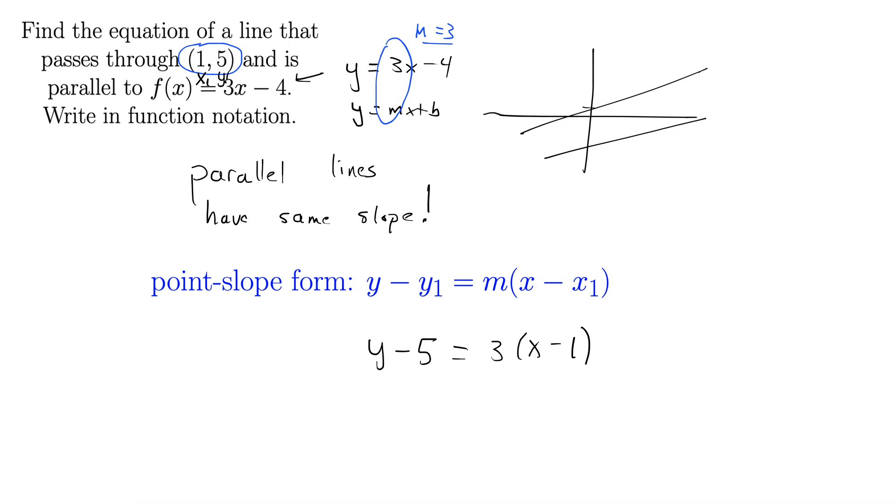Now let's get it into slope-intercept form by solving for y. So this is y - 5. I'm distributing this 3 here equals 3x - 3. Adding 5 to both sides gives us y = 3x + 2.